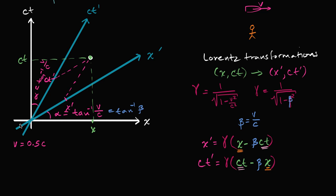Let's pick an event in spacetime. In my coordinate system, in my frame of reference, this event that we focused on in the last video — let's say that is at x equal to one meter, and ct is also equal to one meter. We could view this as a light meter: the time it takes for light to go one meter. So in my frame of reference, this would be the point (1, 1) — one meter in the x direction, one meter in the ct direction.